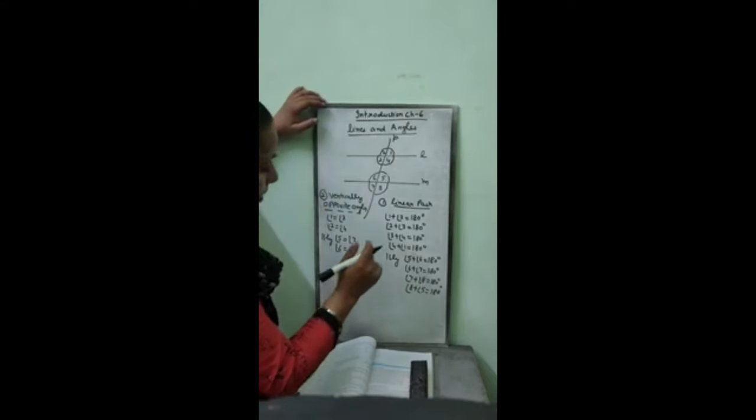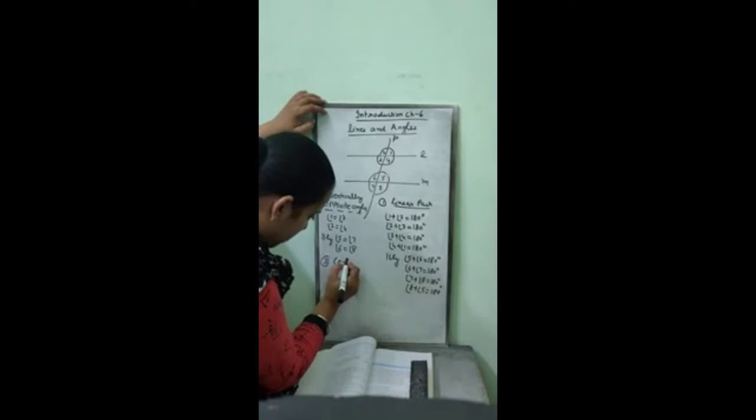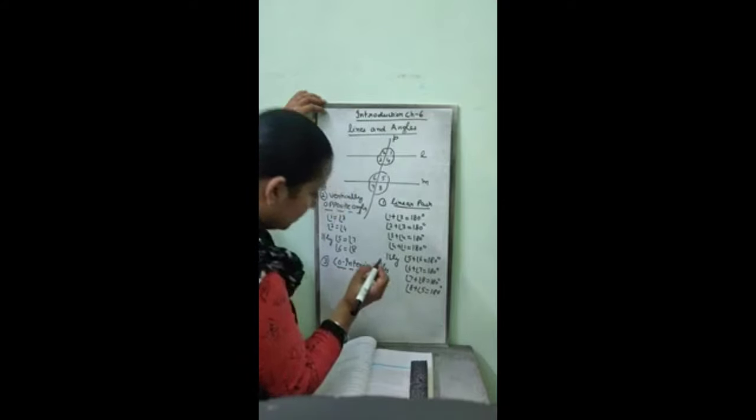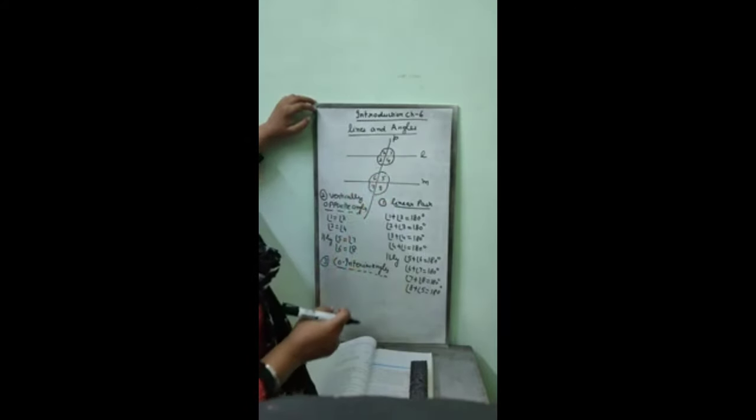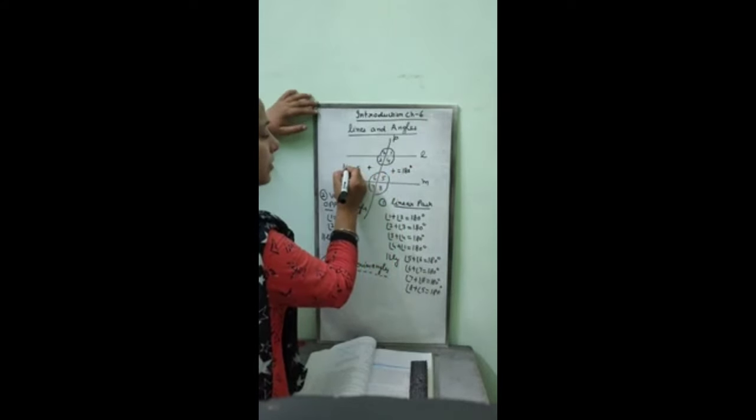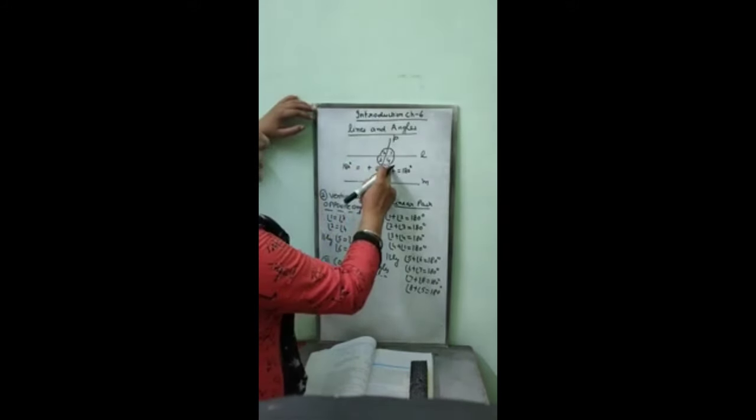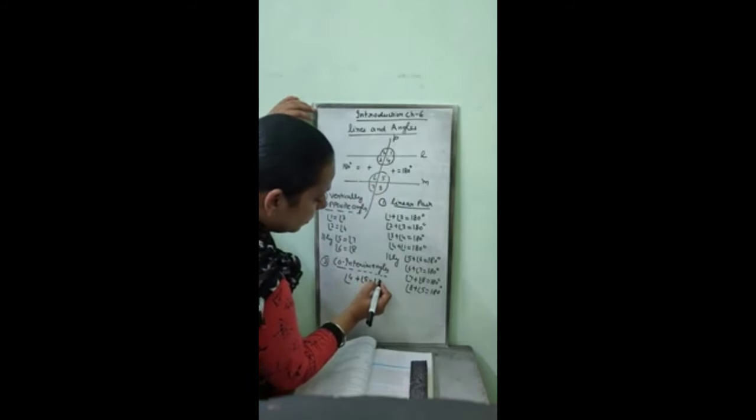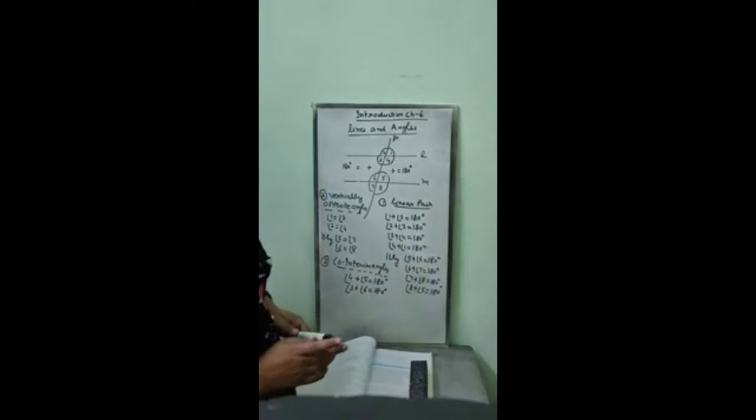Now come to third relation: co-interior angles. Co- means added up. Interior means interior side. Co-interior means 4 and 5, they are making 180. 3 and 6 are making 180 total. The sum of these two angles are 180 on both sides of transversal. Angle 4 plus 5 is 180. Angle 3 plus 6 is 180. Co-interior. Give a one minute review to these three relations, then I will discuss next two.